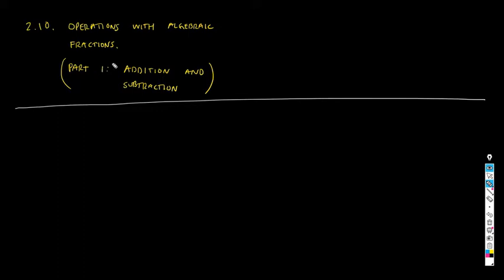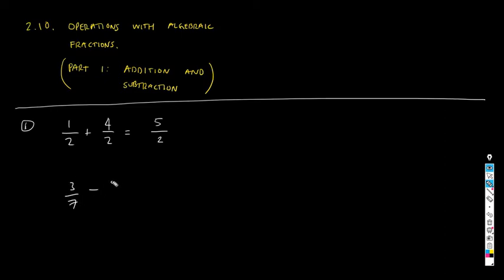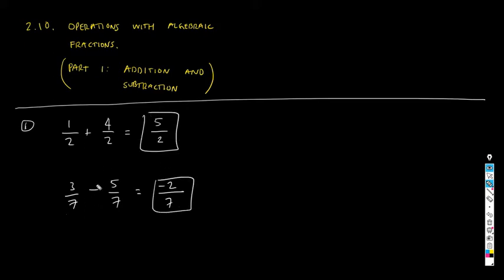First I want to perform some addition and subtraction of fractions — not algebraic, just numerical — to point out several things. We have three cases. Case one is when we have the same denominator, for example 1/2 + 4/2. The addition is very simple: we just add the numerators, 1 + 4 = 5, and keep the denominator the same. Similarly, 3/7 − 5/7 gives (3 − 5)/7 = −2/7. When the denominator is the same, addition and subtraction of fractions requires no special skill.